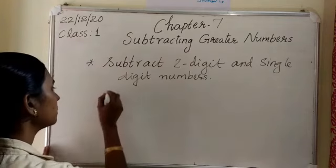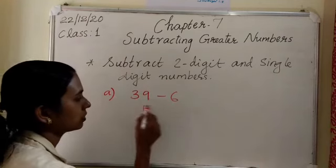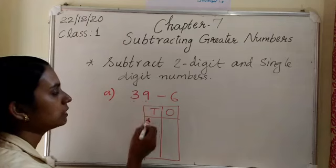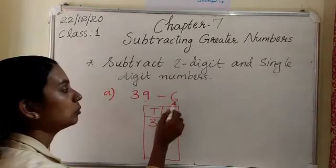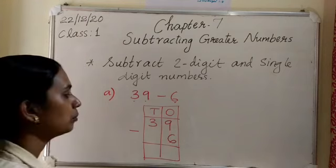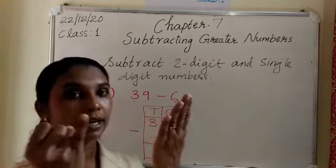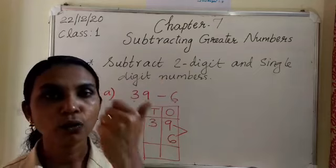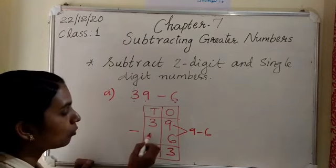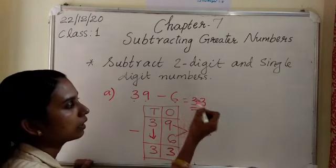Write the example. First one is 39 minus 6. Draw the box and write the tens place and ones place. The first number is 39, then the second number is minus 6 — write 6 in the ones place. Then subtract. What is 9 minus 6? 9 in your mind, 6 on a finger: 8, 7, 6, 5, 4, 3. Write the answer 3. Then there is no more digit to subtract, so you just bring down the 3. Your answer is 33.